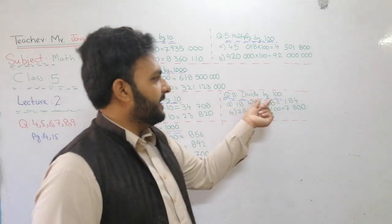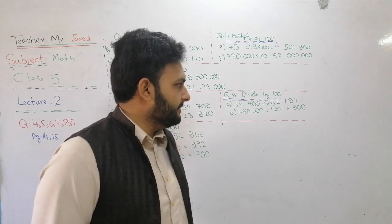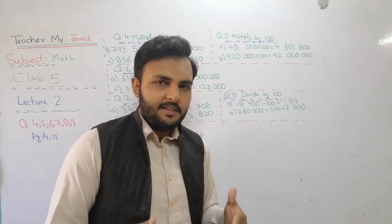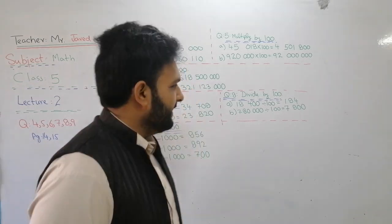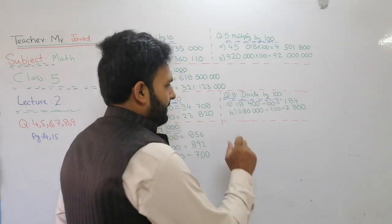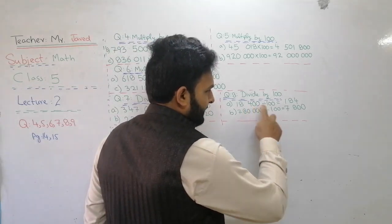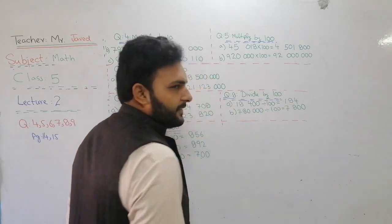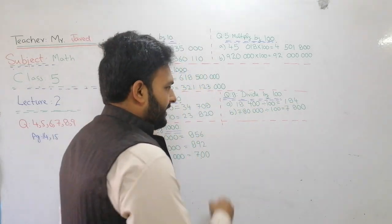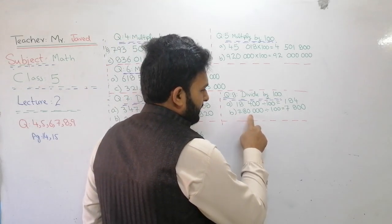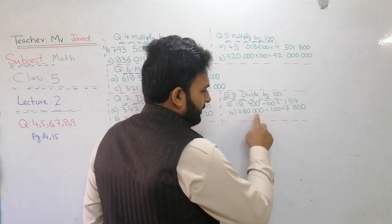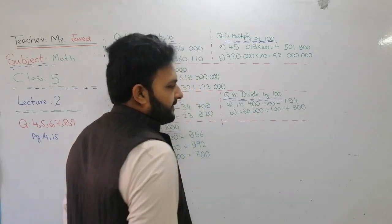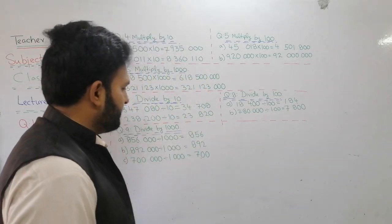Question number 8 — divide by 100. In 100 there are two zeros, so the last two zeros of the given number will be removed. For example: the two zeros are cancelled, leaving 1, 8, 4 as the answer. For part B: 7, 0, 0, 0, 0 — two zeros are removed, two remain, and you write in standard form.